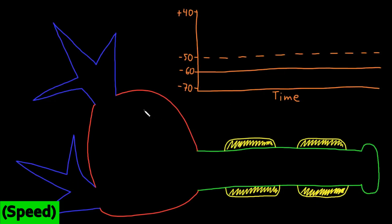We've been talking about how, in the absence of input, most neurons have a stable potential across the entire membrane, which is often around negative 60 millivolts, and without input the resting potential will just stay right there. But excitatory or inhibitory inputs, which usually come in through the dendrites but less often can come into the soma or the axon itself, will cause changes to the resting potential that we call graded potentials.